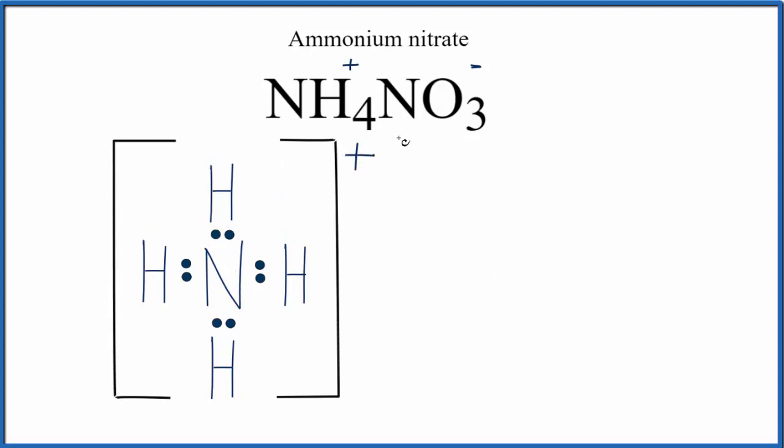Next, we need to do the nitrate ion, NO3 minus. And that Lewis structure will look like this. Again, because it's an ion, it has that negative charge, it's NO3 minus, we do need to put brackets and then write the negative side outside.